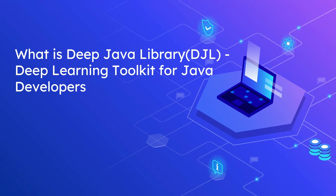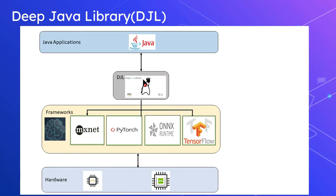DJL supports the most popular AI/ML frameworks such as Apache MXNet, PyTorch, and TensorFlow. With the DJL API, you get a uniform and consistent layer that can interact with all of these frameworks, allowing you to swap out the framework of your choice without any impact to the client code.